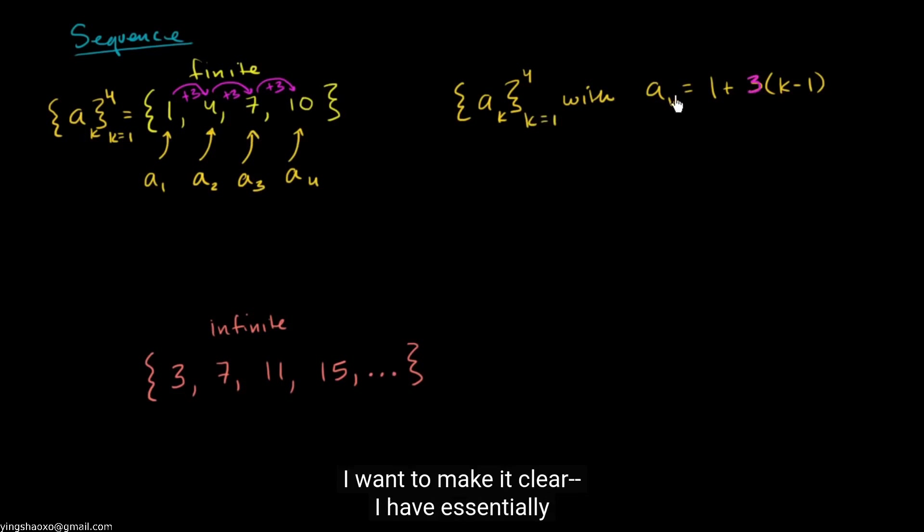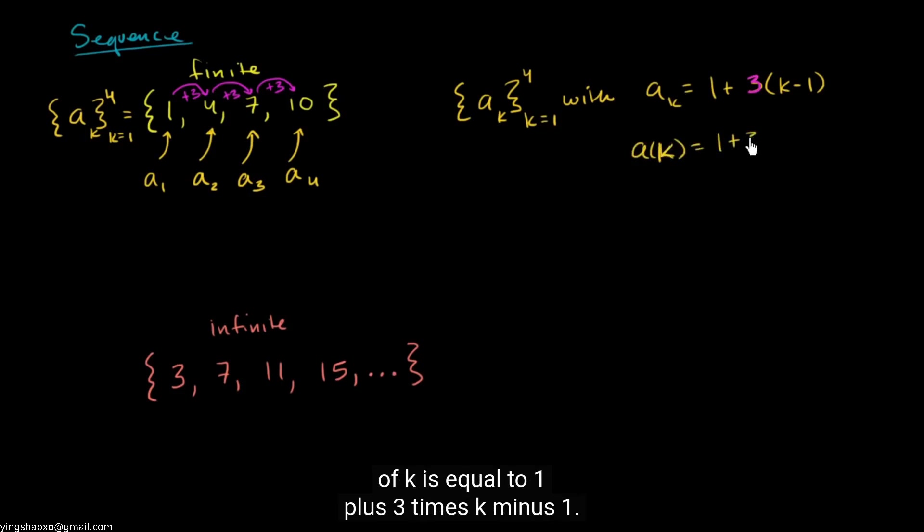To make it clear — I've essentially defined a function here. In a more traditional function notation, I could write a(k), where k is the term that I care about: a(k) = 1 + 3(k − 1). This is essentially a function where the allowable input — the domain — is restricted to positive integers.